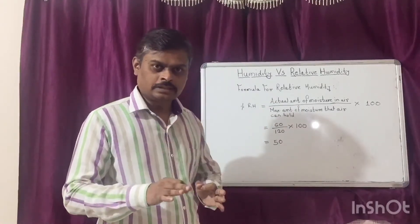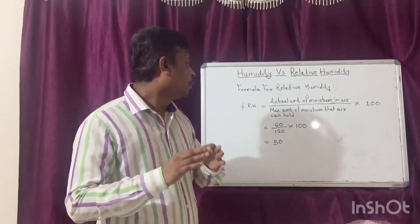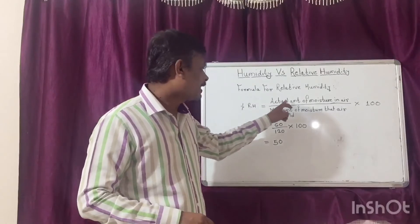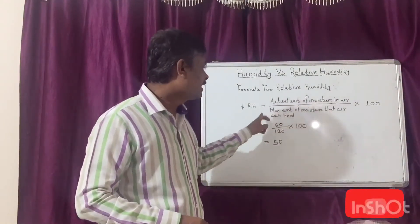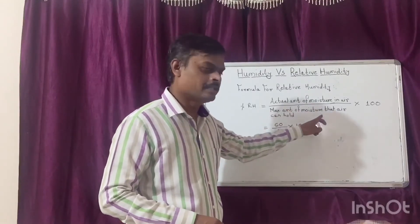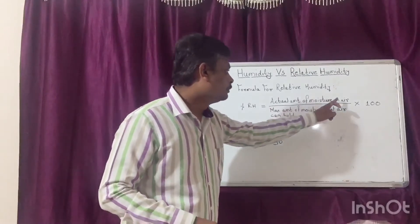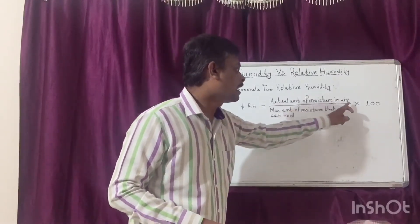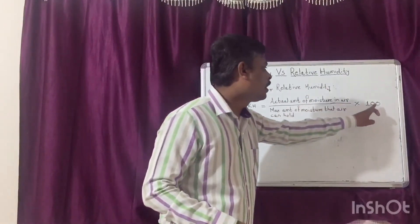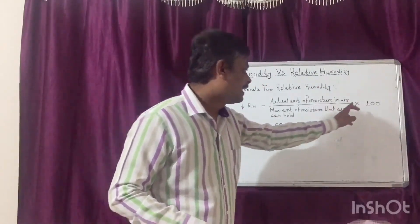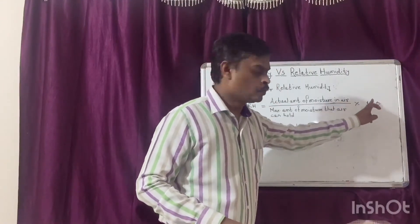Based on this, the formula for relative humidity is: actual amount of moisture in air divided by the maximum amount of moisture that air can hold, multiplied by 100. Both determinations shall be carried out at the same temperature. This multiplication by 100 is to convert the result into percentage.